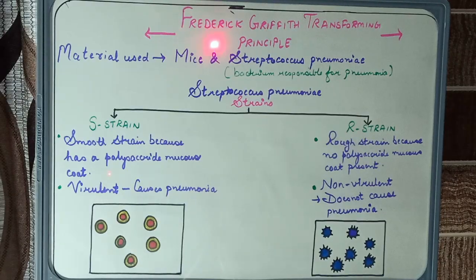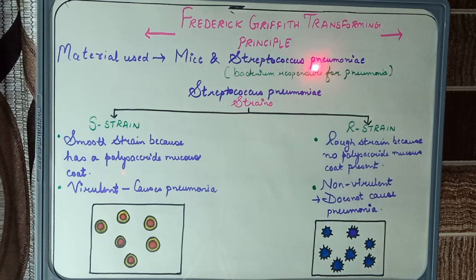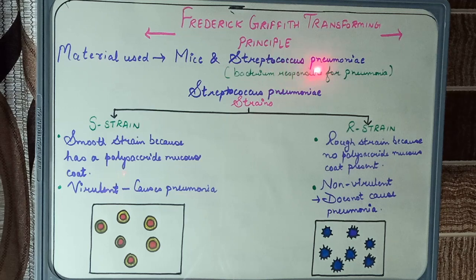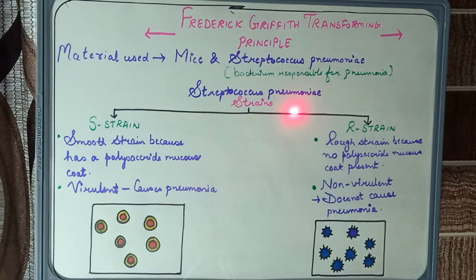Griffith did an experiment known as the transforming experiment. He used mice and Streptococcus pneumoniae, a bacteria responsible for pneumonia. This bacteria has two strains: S strain and R strain.